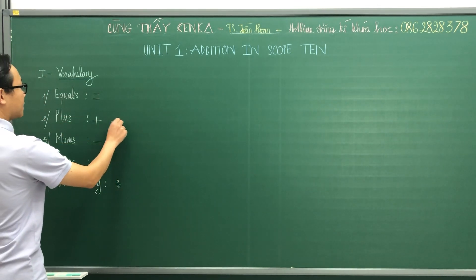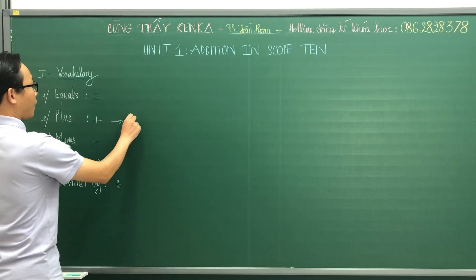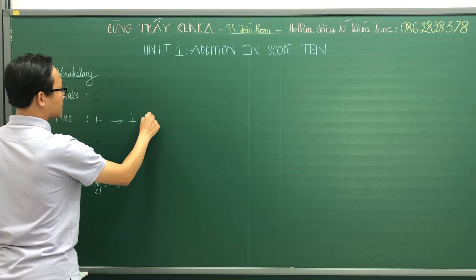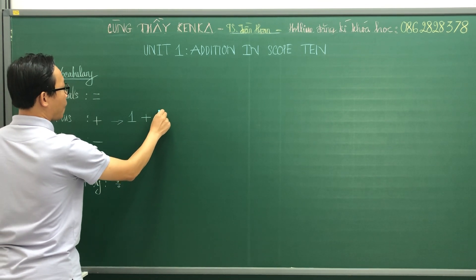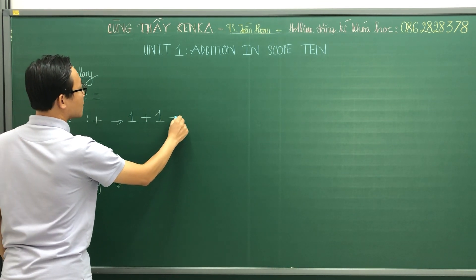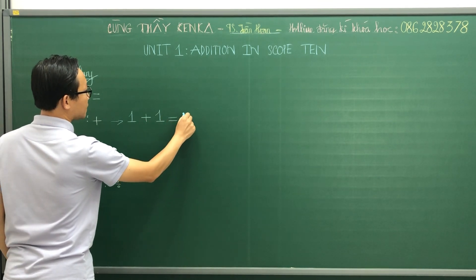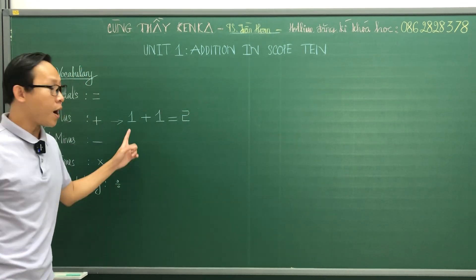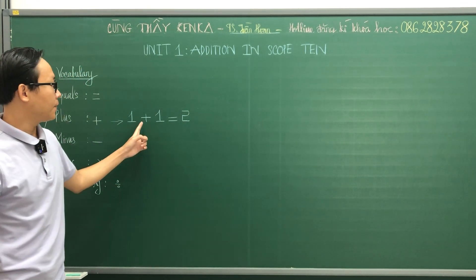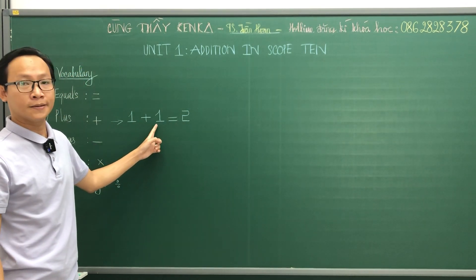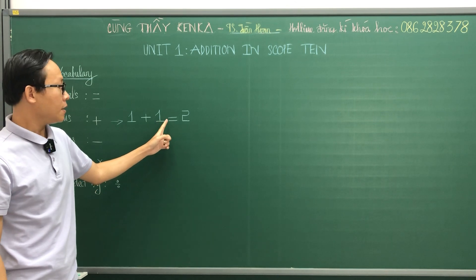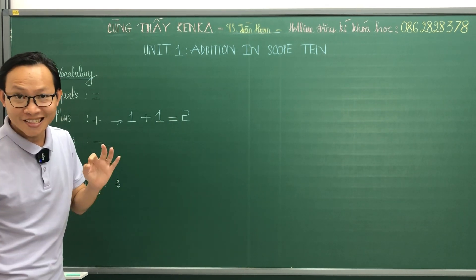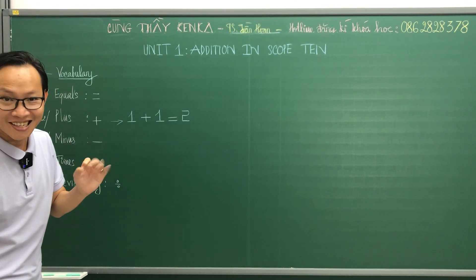It's simple. One plus one equals two. One plus one equals two. Okay, good.